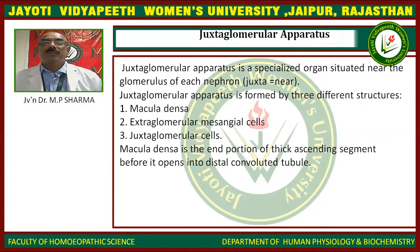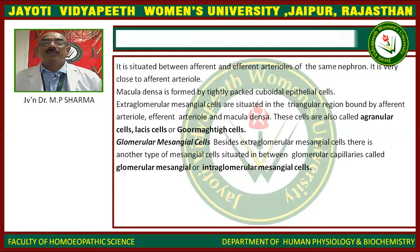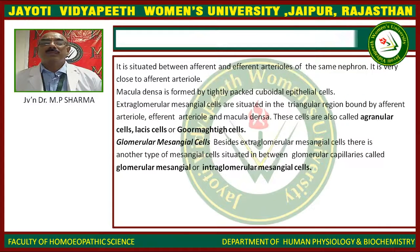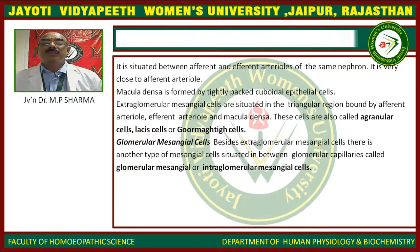The macula densa is the end portion of the thick ascending segment before it opens into the distal convoluted tubule. It is situated between the afferent and efferent arterioles of the same nephron, very close to the afferent arteriole. Macula densa is formed by tightly packed cuboidal epithelial cells.